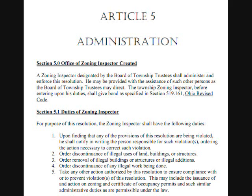Order discontinuance of any illegal work being done. 5. Take any other actions authorized by this resolution to ensure compliance with or to prevent violations of this resolution. This may include the issuance of the action of zoning and certificate of occupancy permits and such similar administrative duties as are permissible under the law.